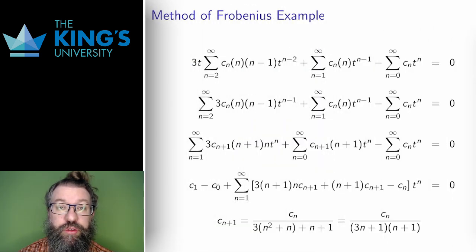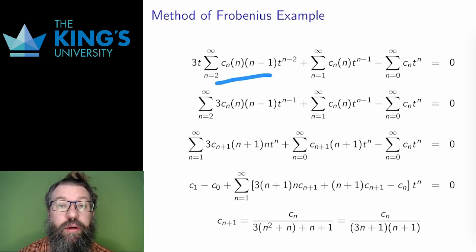Here is the first solution, working with r equals 0. I go back to the original differential equation and put in a generic series and its derivatives. Here, since r equals 0 and I'm not multiplying by any extra powers of t, I do lose constant terms in the derivatives.